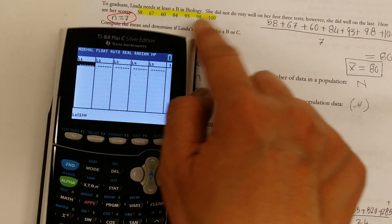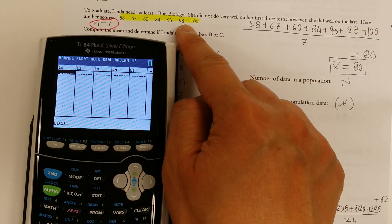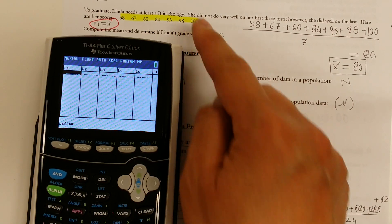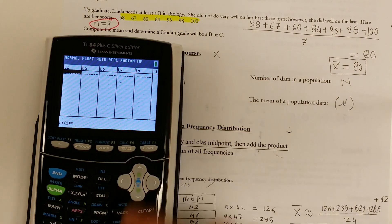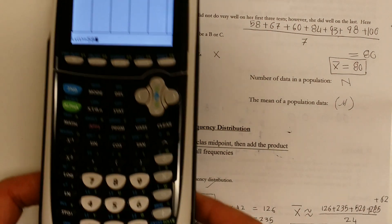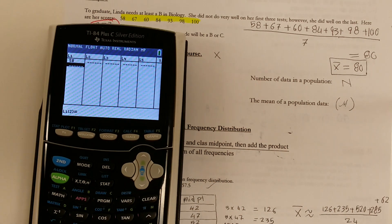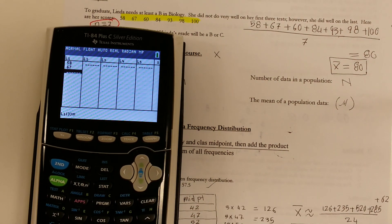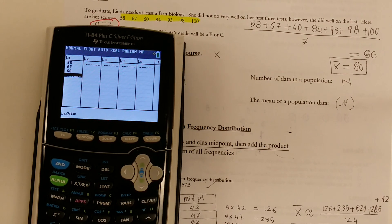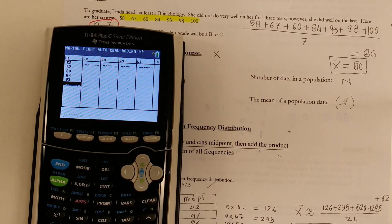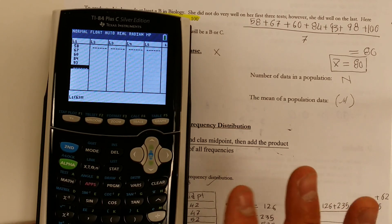Now, we're ready to enter these data, so that we can use the calculator to find the mean. So here we go, 58. So I'm going to type in 58. Hit enter. And then that registered the data. Go 67. Enter. 60. Enter. 84. Enter. 93. Enter. And that's all you have to do. So you enter all the data.